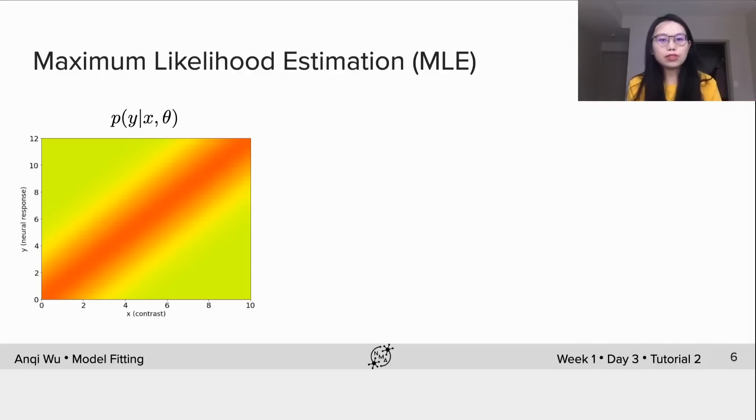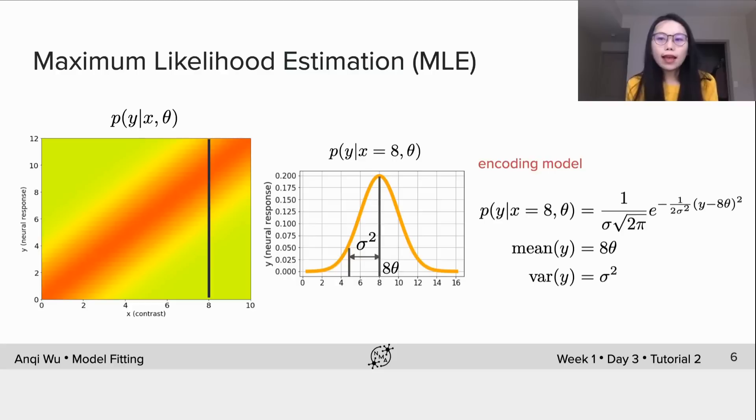Here we can visualize the distribution of p(y|x, theta) if we know the true value of theta. For an arbitrary x, say x equals 8, we can slice this 2D distribution and plot the 1D version. The orange bell-shaped curve describes the Gaussian density function. The mean is at 8 multiplying theta now and the standard deviation is sigma. This is just an example of the 1D slice visualization of p(y|x, theta).